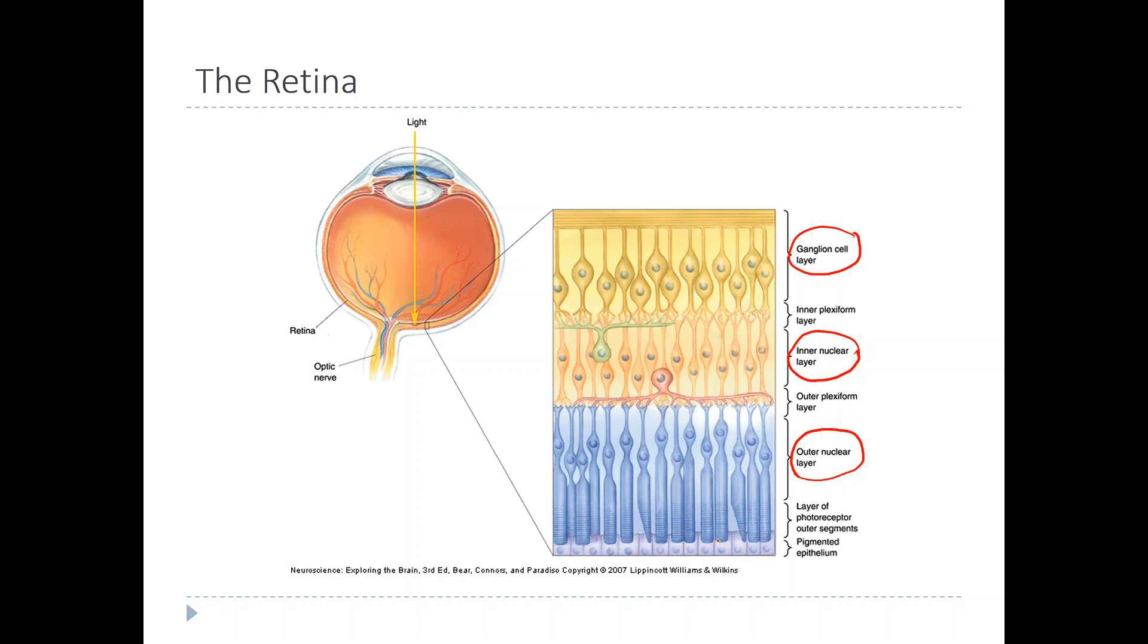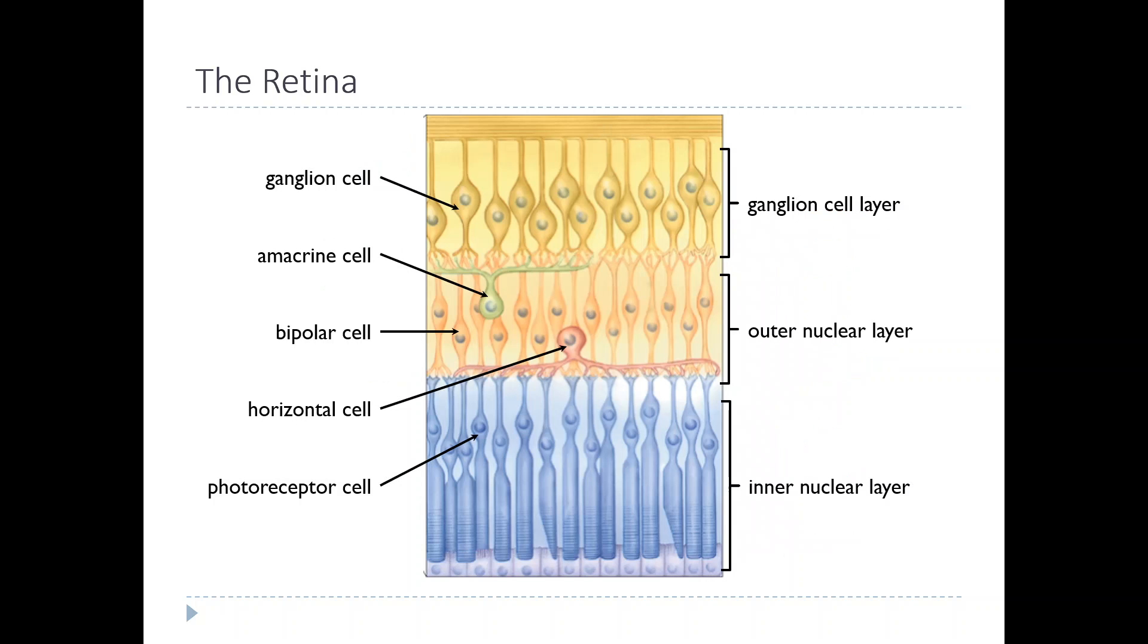There are three types of cells that make up each layer. The ganglion cell layer is made of retinal ganglion cells. Then the outer nuclear layer is made up of specialized cells called bipolar cells. They're called bipolar because this cell body only has two processes - one which you would call a dendrite, one of which you might call an axon.